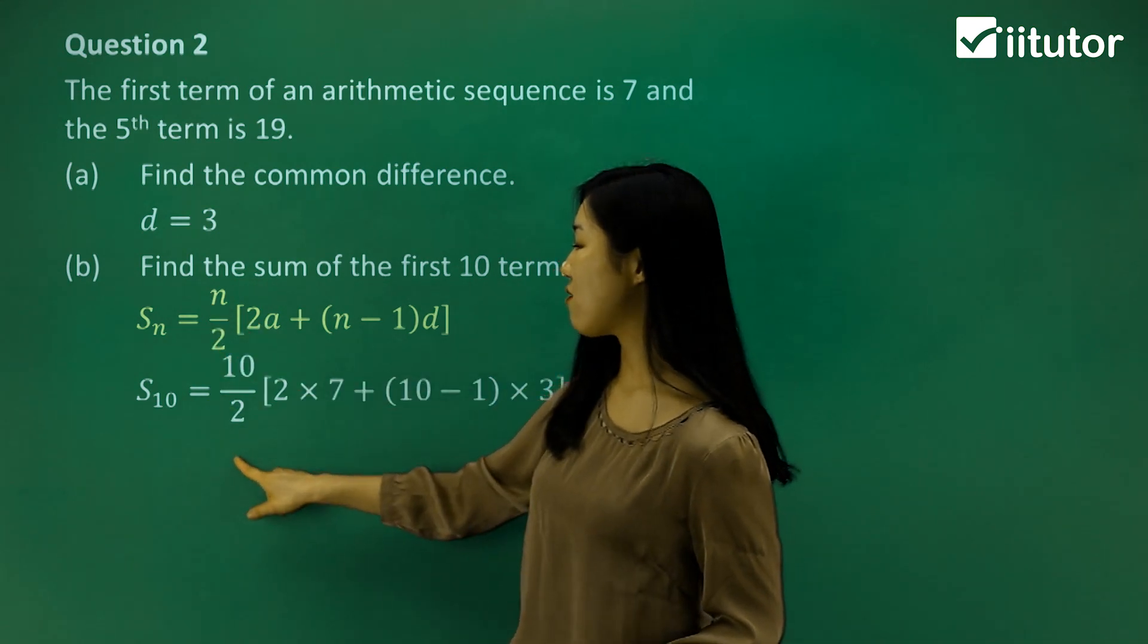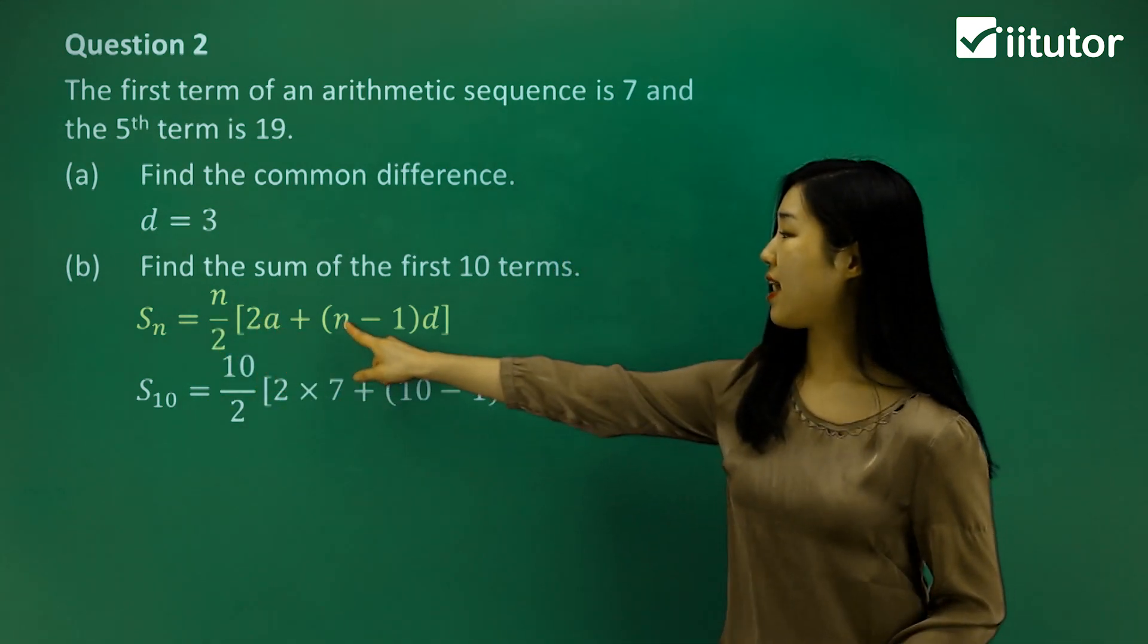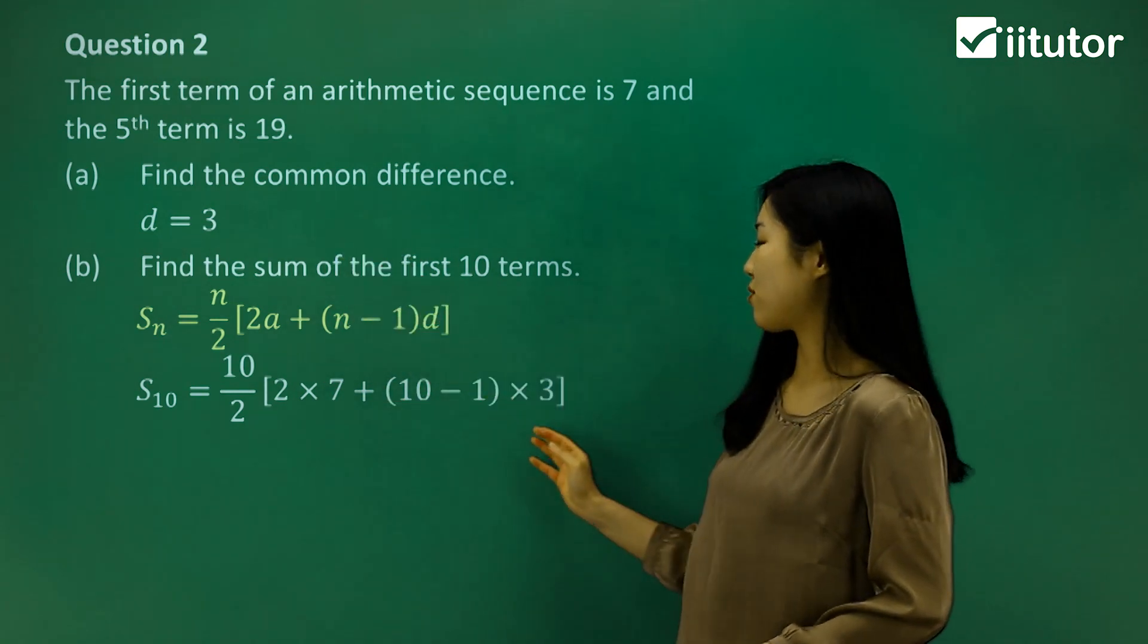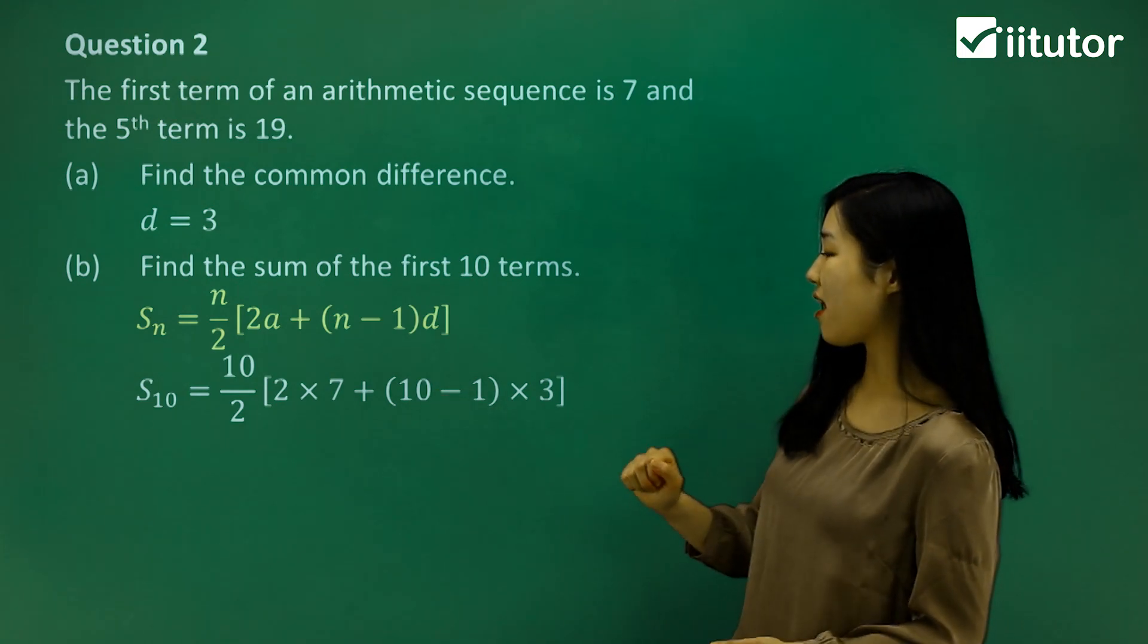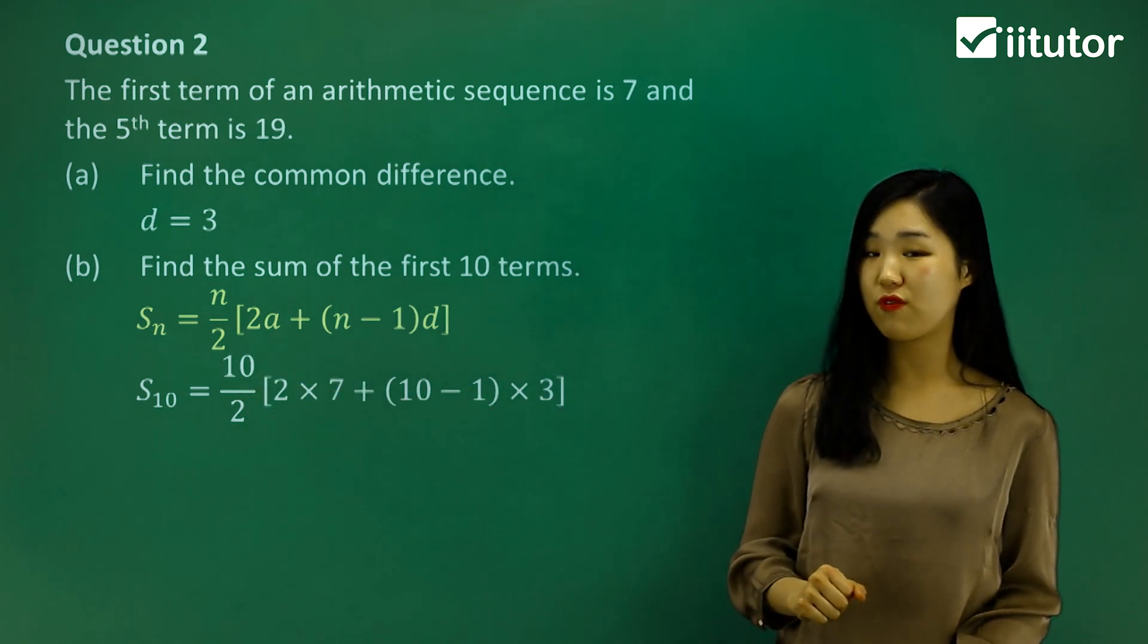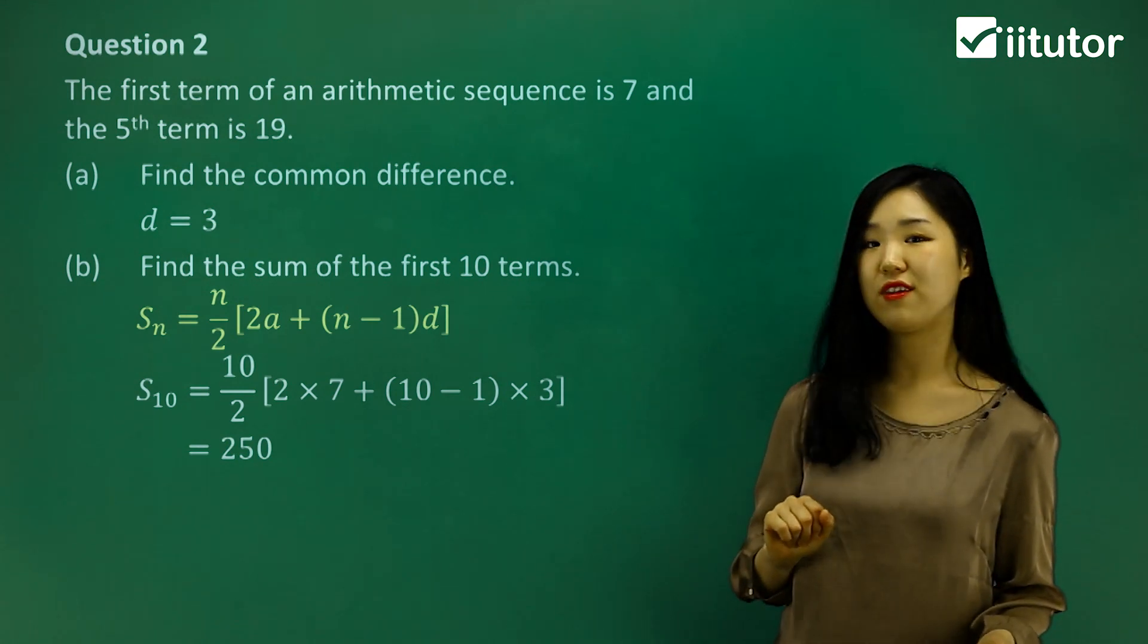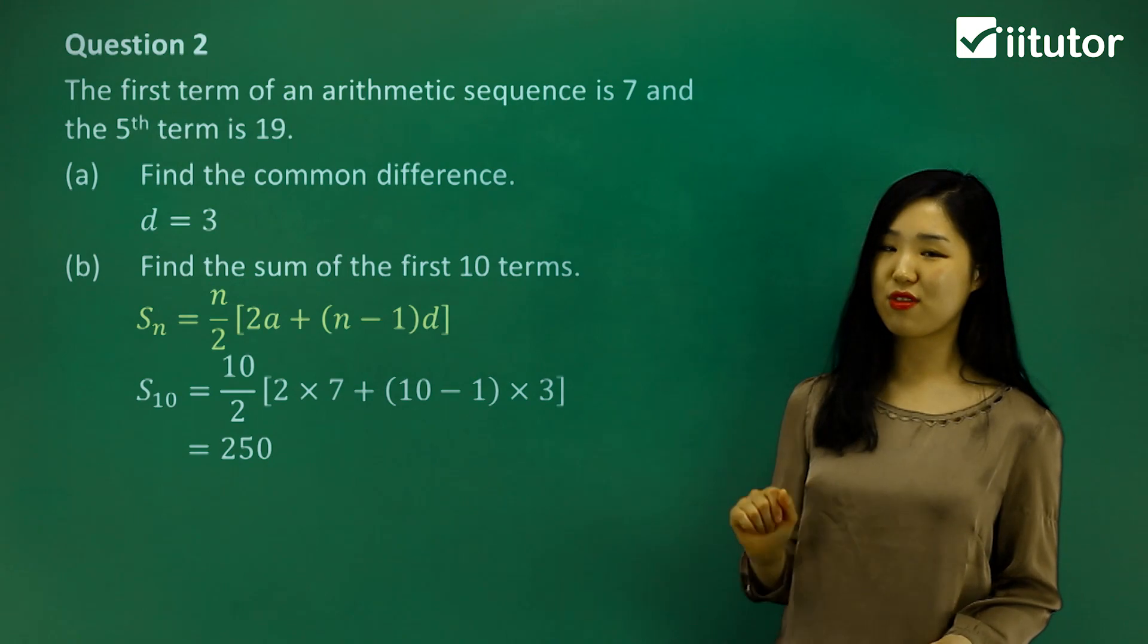So S10, 10 over 2, 2 times a, which is 7. n is going to be 10, and the common difference we found it in part a, it was 3. Let's put it all in. Do the brackets first. 10 minus 1 is 9, times 3 is 27. Plus it to the 14, and then multiply it by the 10 over 2, which is 5. And just calculate that for me. It should be 205. So that's just the answer. So that's the sum of the first 10 terms in this arithmetic series.